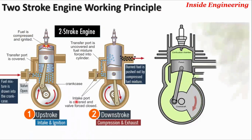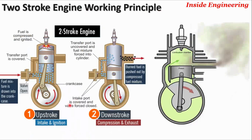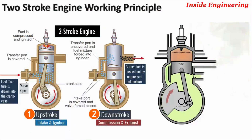So we get power from every revolution of the crankshaft. One engine operating cycle is completed with one upward and one downward stroke of the piston. Within the two strokes, the air-fuel mixture is converted into useful power.